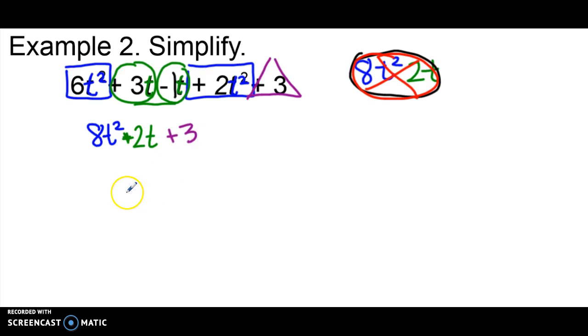Now in order to be in simplest form, it means I need to have only one of each term and sure enough, I only have one t squared, one t term, and then one term without a variable. So this is my final answer.